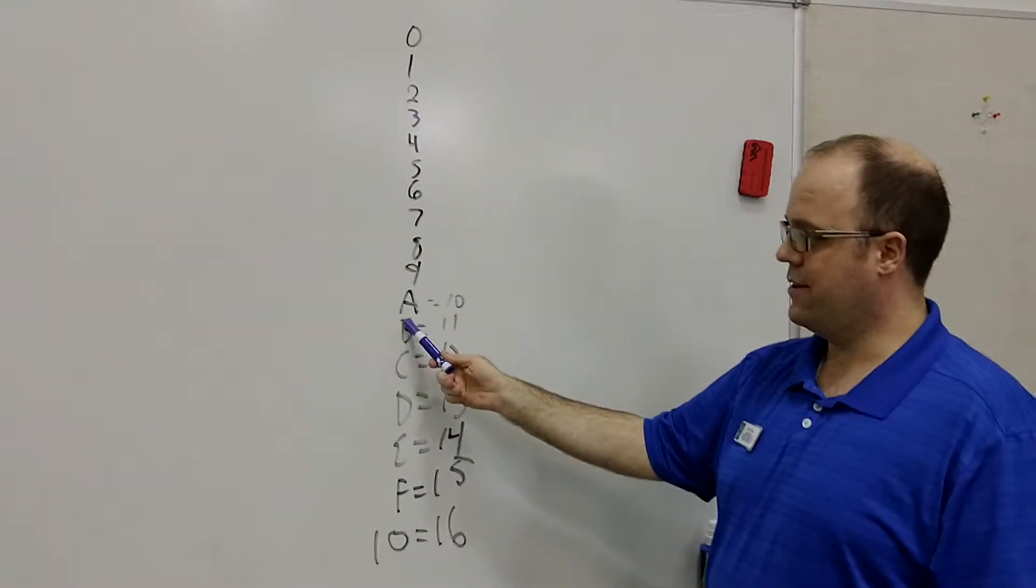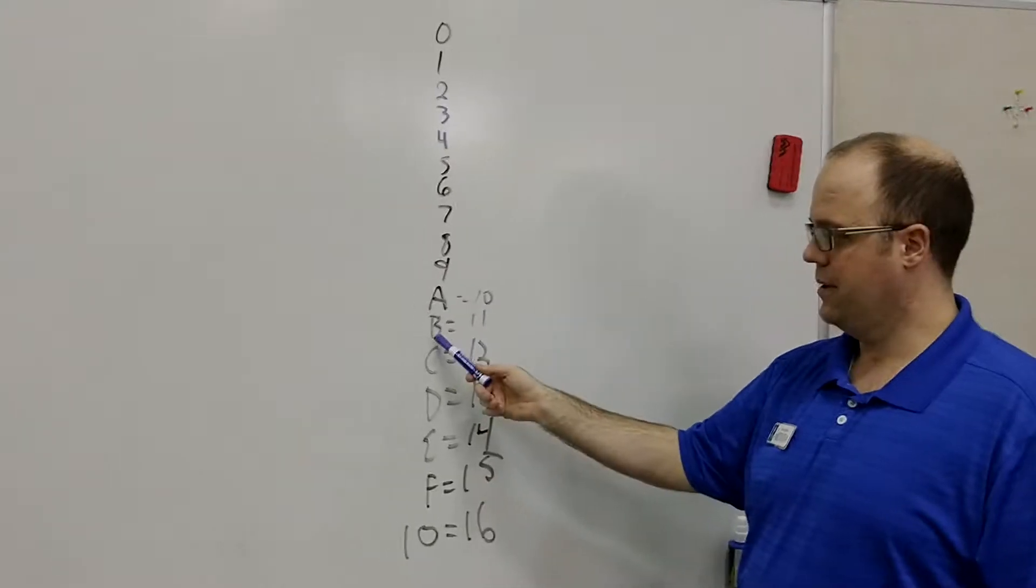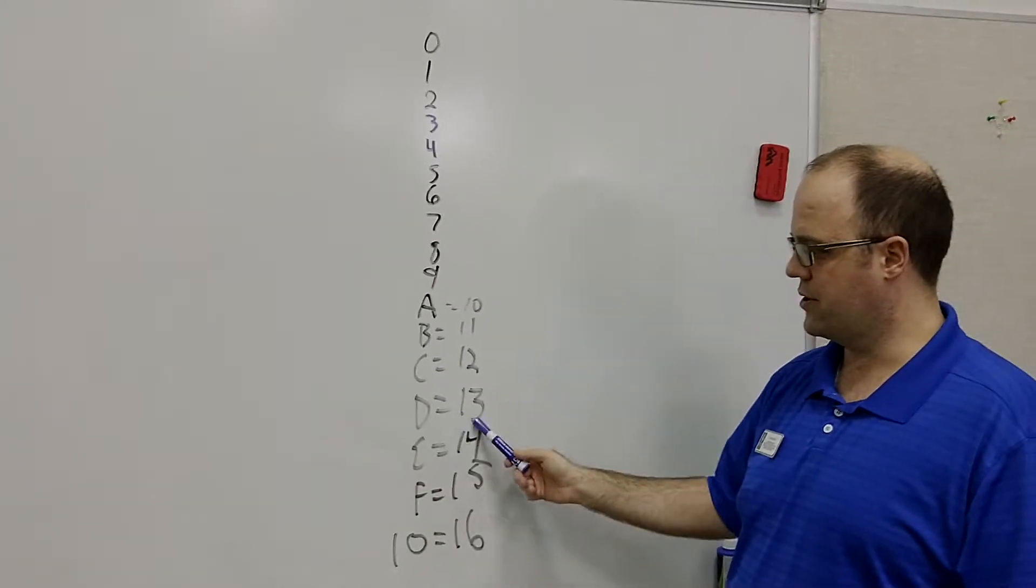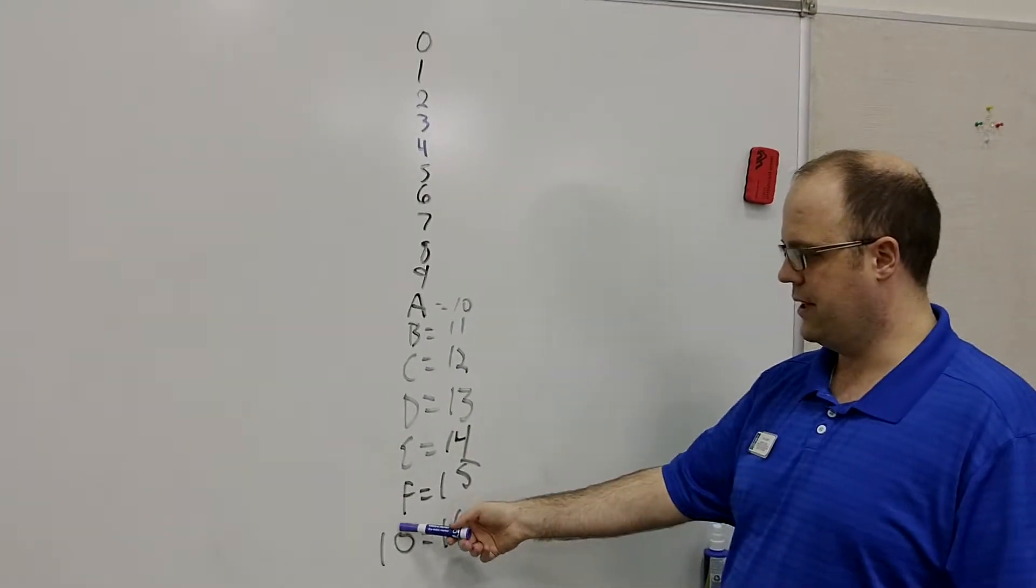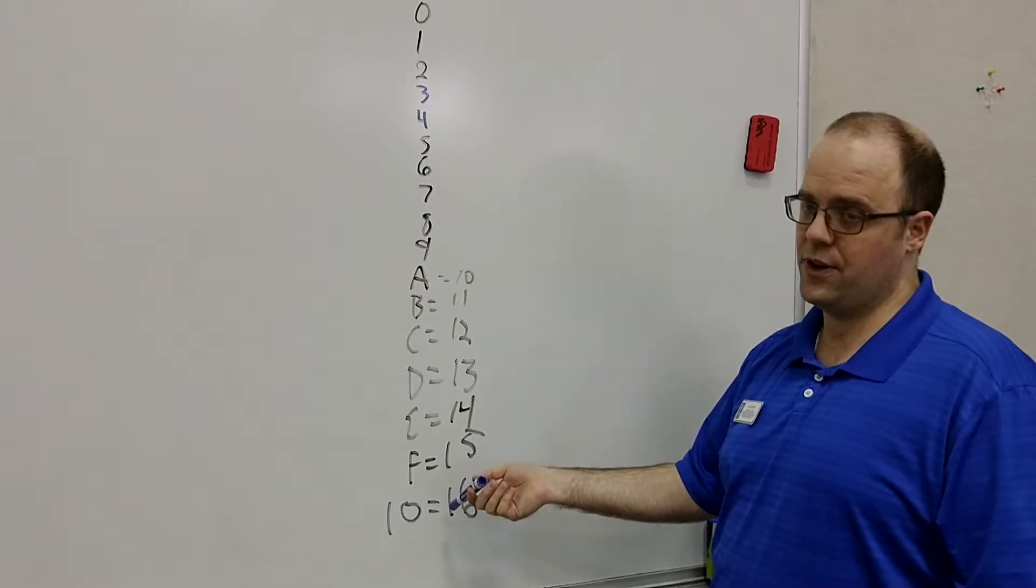So if you see A, think of that as 10. B is 11, C is 12, D is 13, E is 14, F is 15.